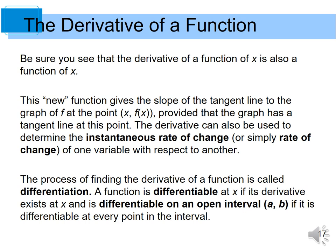Be sure you see that the derivative of a function of x is also a function of x. For example, if f(x) equals 2x squared, then the derivative is f prime(x) equal to 4x — demonstrating that the derivative is itself a function of x. This new function gives the slope of the tangent line to the graph of f at the point x, provided the graph has a tangent line at that point. The derivative can also be used to determine the instantaneous rate of change of one variable with respect to another.